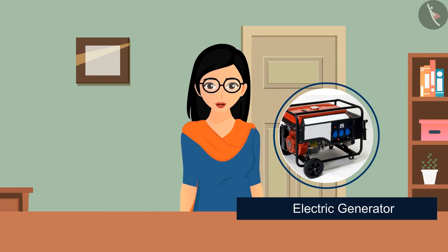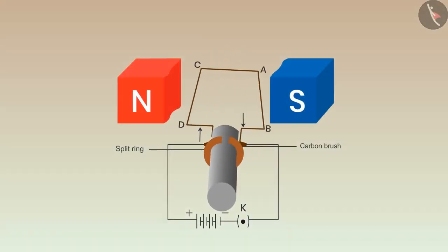You can see this generator in your houses or industries. In case of electric motors, the coil is rotated when electric current is passed through the coil placed in the magnetic field.